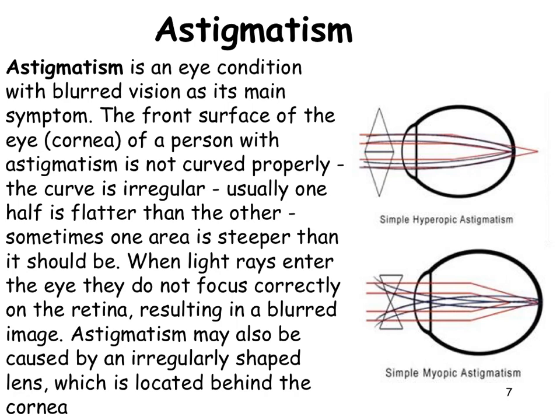Astigmatism is an eye condition with always-blurred vision — it affects both near and far sight. The cornea of the person's eye is not curved properly; parts of it are flattened or don't curve correctly. This means light does not focus correctly and every image is distorted. Astigmatism is corrected using small prisms inside glasses.